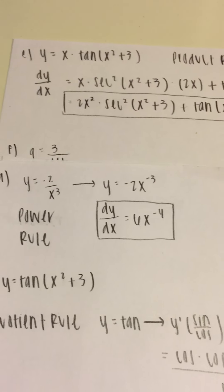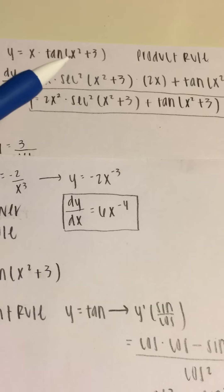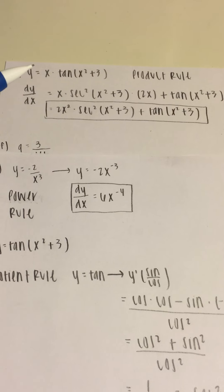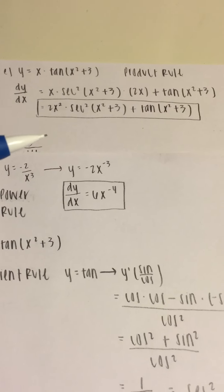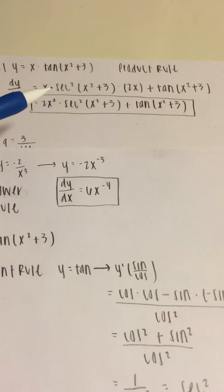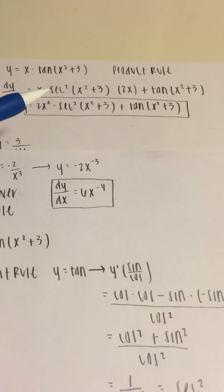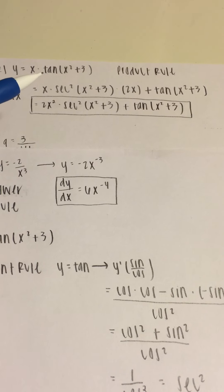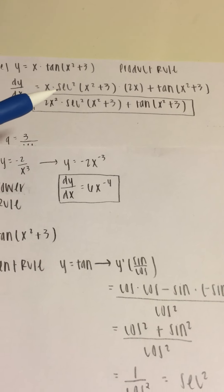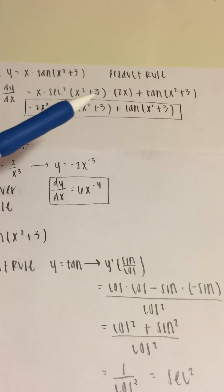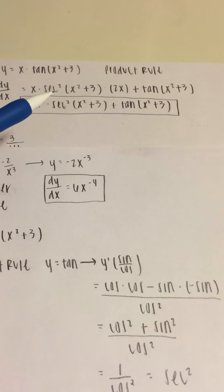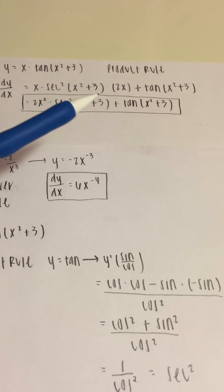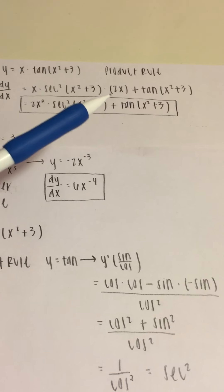For E, we get y equals x times tangent of x squared plus 3. To solve this, we use the product rule: the first times the derivative of the second, plus the second times the derivative of the first. The first function is x, and the derivative of tangent of x squared plus 3 requires the chain rule. The derivative of tangent gives secant squared, and the derivative of the inner function x squared plus 3 is 2x.